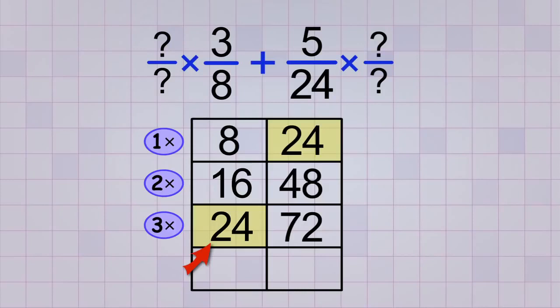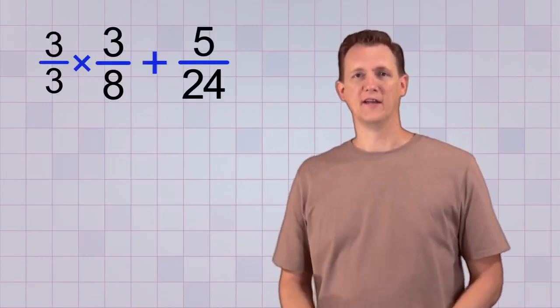To get our common multiple, we had to multiply our 8 by 3, so we're going to use the whole fraction 3 over 3 for our first fraction. And our common multiple for 24 was just itself. We multiplied by 1, so we could use the whole fraction 1 over 1, but we really don't need to since multiplying by 1 won't change anything. We already have the denominator of 24 on that side, so we don't need to change it.